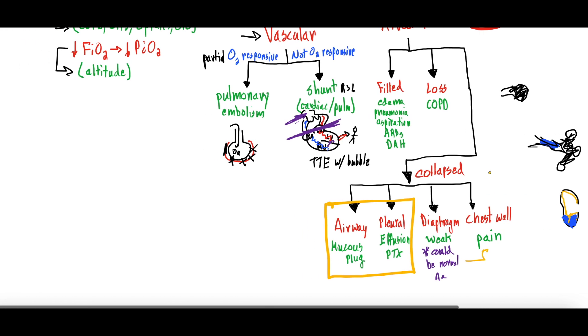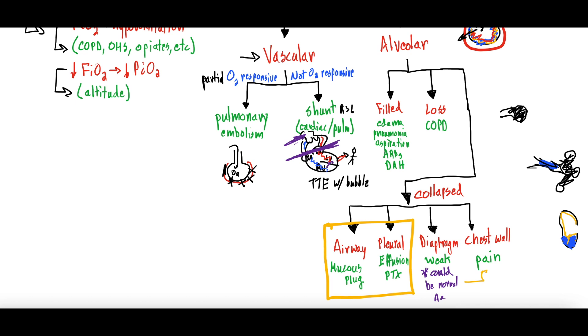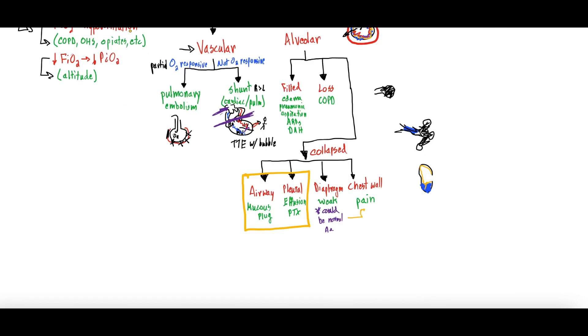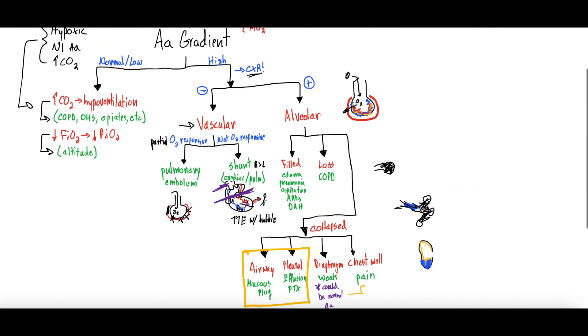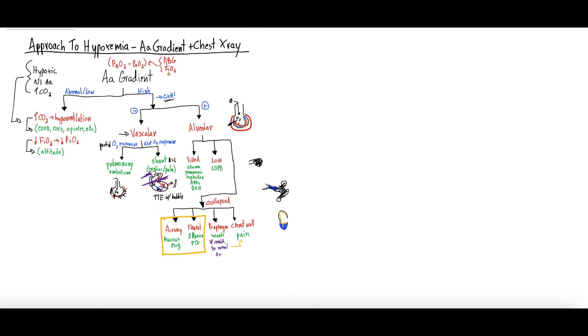All right, so that is the approach to hypoxemia using the A-a gradient and chest x-ray. And for the A-a gradient, remember all you need is that ABG and FiO2. So this technique just needs an arterial blood gas, they need to know how much oxygen the patient is on, and then you need a chest x-ray. Hope that was helpful. Let us know what thoughts, comments, questions you have down below. Let us know what other topics you'd like us to cover. Definitely check out our Understanding the A-a Gradient video as well. And we will see you all next time.